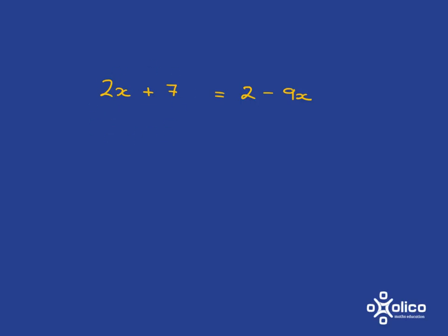So, because we want to get x's alone over here, let's get rid of that 7. And of course, balancing our equation means that we must do the same on the other side. 2 subtract 7 is negative 5, and so we have that picture.